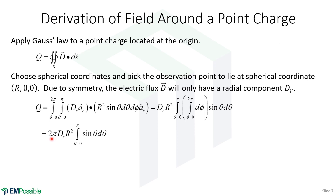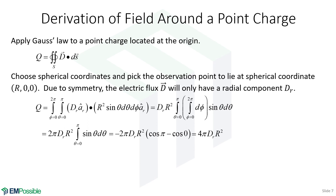We bring that 2 pi to the outside. Now we're left integrating sine from 0 to pi. The antiderivative of sine is negative cosine, so we bring that negative to the outside and evaluate cosine of pi minus cosine of 0. Cosine of pi is negative 1, so we have negative 1 minus 1, which gives us negative 2. We cancel the negatives, and the 2 combines with the 2 out here, and we end up with 4 pi D_R R squared.